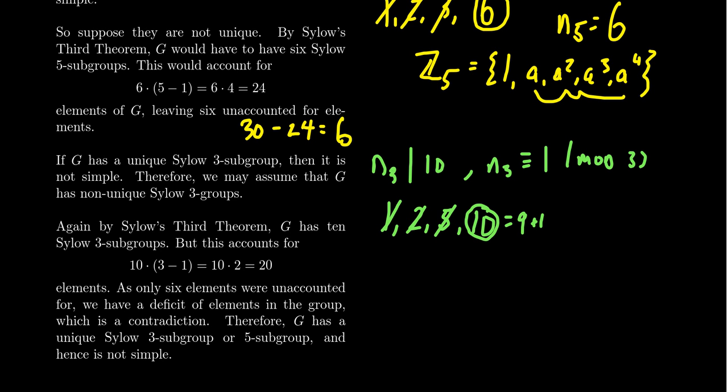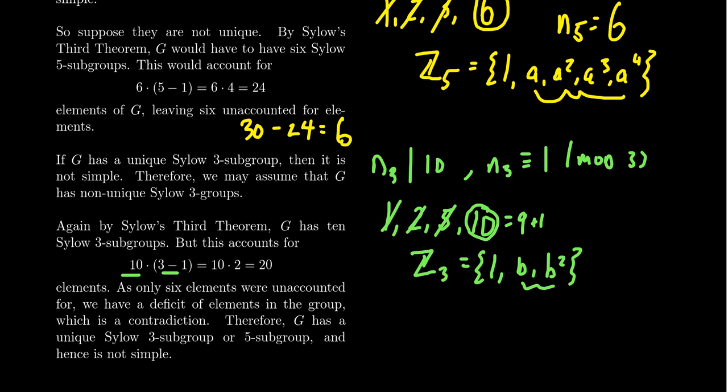But then the same argument applies. Each of these Sylow subgroups has to be order 3. They're order 3, and therefore they have to be cyclic of order 3. They will contain the identity, some other element, and then its square. Both of these elements are elements of order 3. And the intersection of any two Sylow 3-subgroups is going to be trivial. So between the 10 subgroups, each of them will contribute two elements of order 3. So that gives us 20 elements total, but we only have six elements left. So there's a deficit of 14 elements.